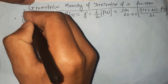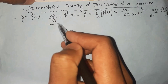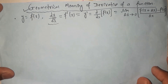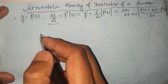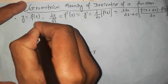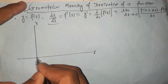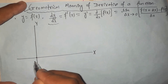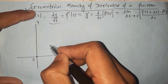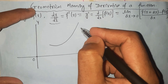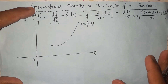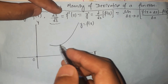Let's discuss the geometrical meaning of the derivative of the function f of x. Let's make a graph first. This is the rectangular coordinate system — the x-axis, the y-axis, and their intersection is taken as the origin reference point. Let me draw a curve of a function — let's say this is the curve of a function y equals f of x.